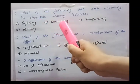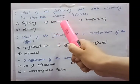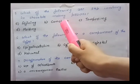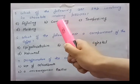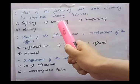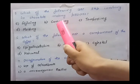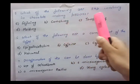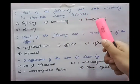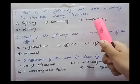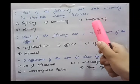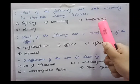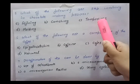Second option is conching — it is a special process in chocolate manufacturing. Conching means a process by which warm chocolate is kneaded and aerated. Third option is tempering — tempering is also done during chocolate manufacturing. It is a process of heating and cooling to make chocolate resistant to melting.